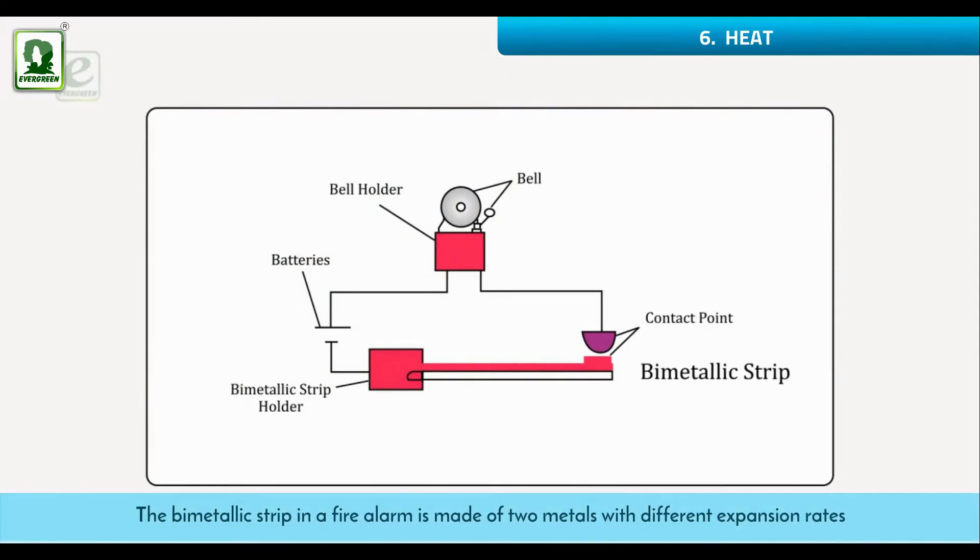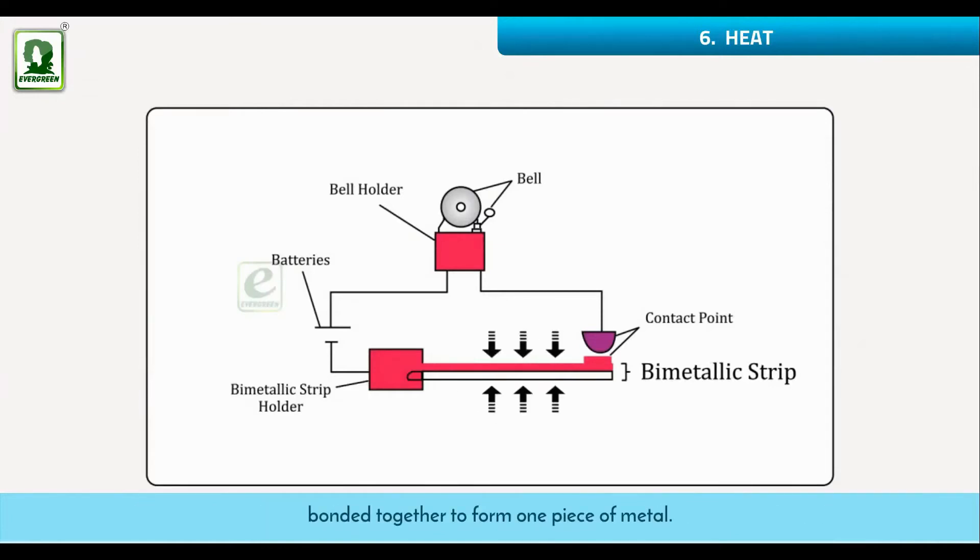The bimetallic strip in a fire alarm is made of two metals with different expansion rates bonded together to form one piece of metal. Typically, the low expansion side is made of a nickel-iron alloy called Invar, while the high expansion side is an alloy of copper or nickel.